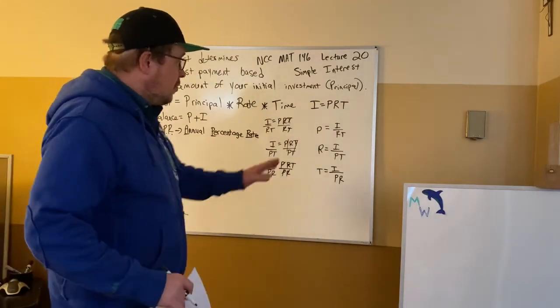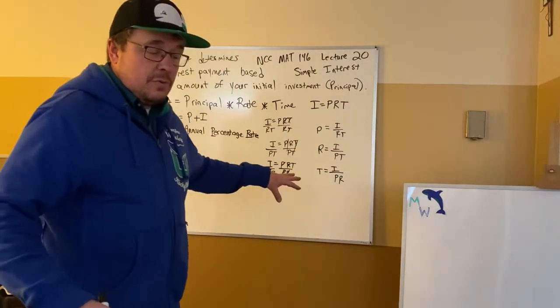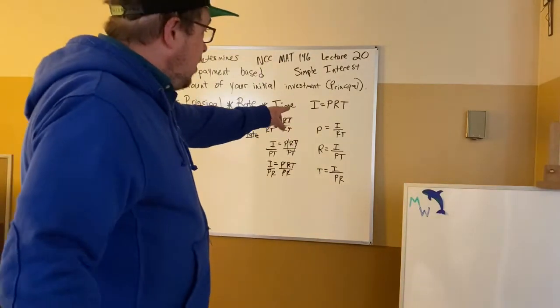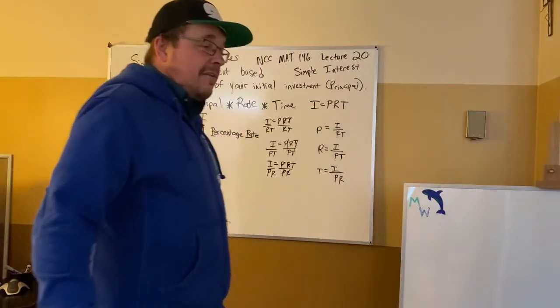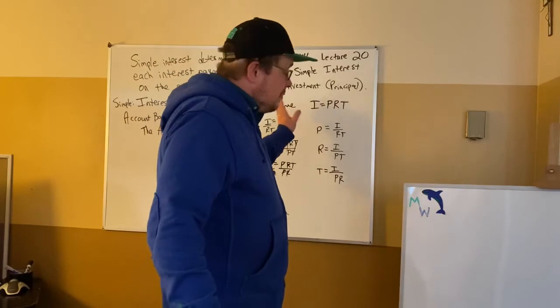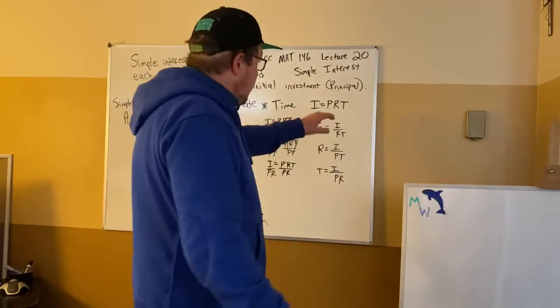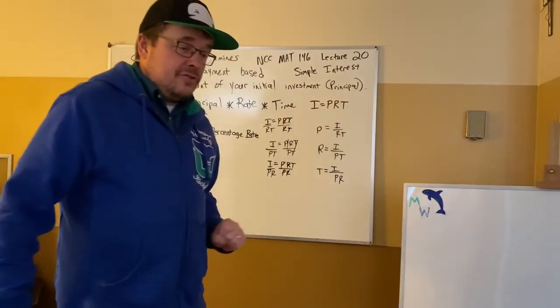So those are all possibilities of what we're going to have to do. You can find each individual one that you need or you can plug in the three values that you have. If you're looking for I, you'll go ahead and multiply them. And if you're looking for anything else, you'll start with I, you'll divide by the other two.